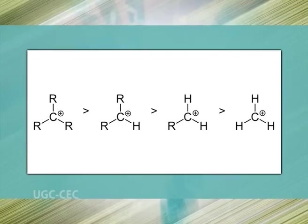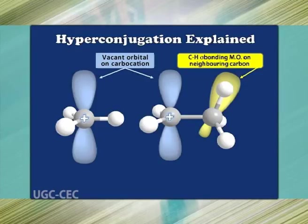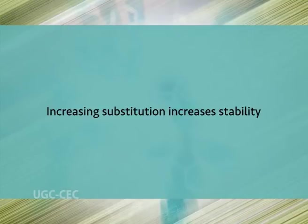Decreasing the electron deficiency increases the stability. The second factor is the number of carbons attached to the carbon bearing the positive charge. Bonding electrons from adjacent sigma bonds may overlap with the unoccupied p orbital of the carbocation — a phenomenon termed hyperconjugation. Since this overlap supplies electron density to the electron-deficient carbocation, increasing the number of hyperconjugative interactions increases stability. Thus increasing substitution increases stability.